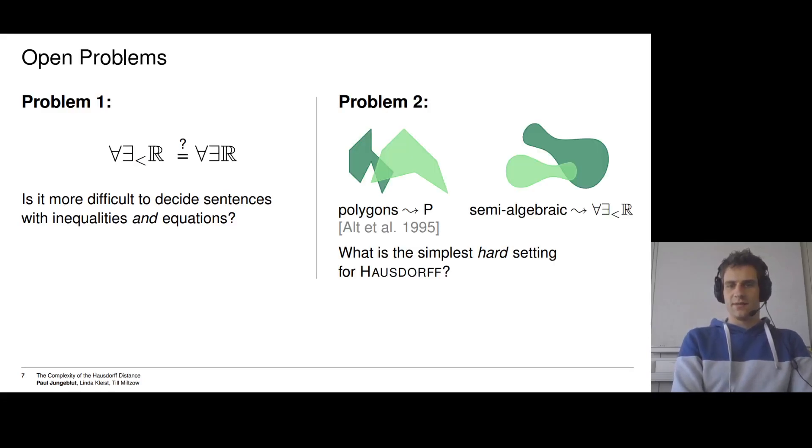And the second problem is: what is the simplest hard setting for the Hausdorff problem? If we are given two simple polygons, you can decide the Hausdorff distance, or even compute it, in polynomial time. We showed that this is not possible for semi-algebraic sets, where the problem is strict ∀∃ℝ complete. So where is this tipping point? What is the simplest hard setting? Thank you very much.